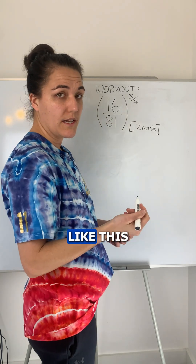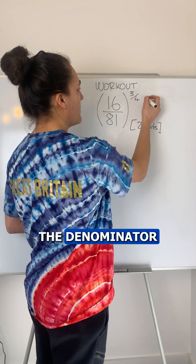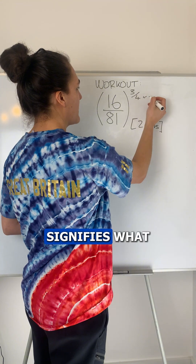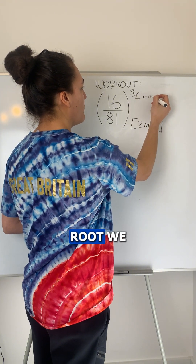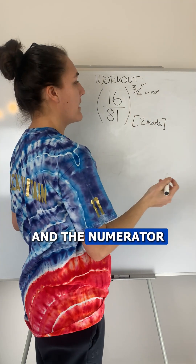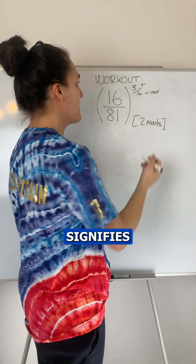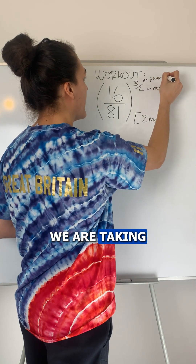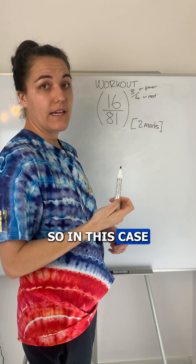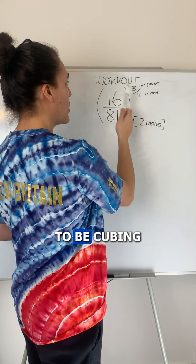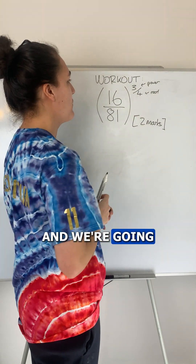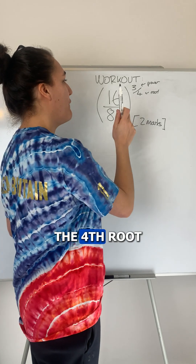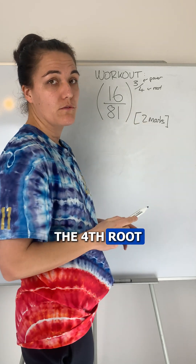In questions like this, the denominator signifies what root we are taking and the numerator signifies what power we are taking. So in this case, we're going to be cubing and we're going to be taking the fourth root.